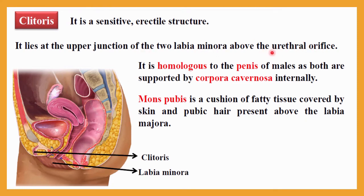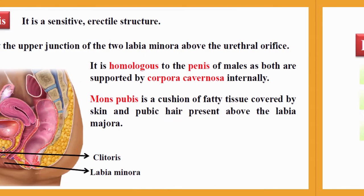The clitoris lies at the upper junction of the two labia minora, above the urethral orifice. It is homologous to the penis of the male, and both are supported by corpora cavernosa internally. Mons pubis is a cushion of fatty tissue covered by skin and pubic hair, present above the labia majora.